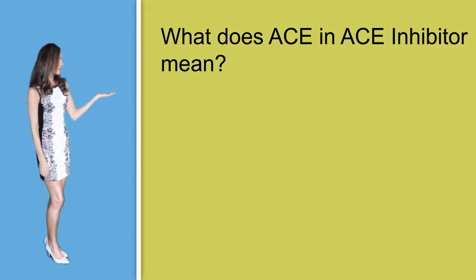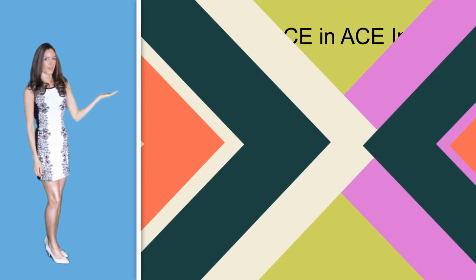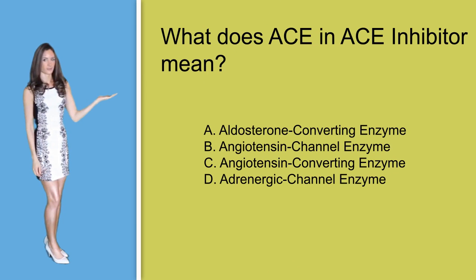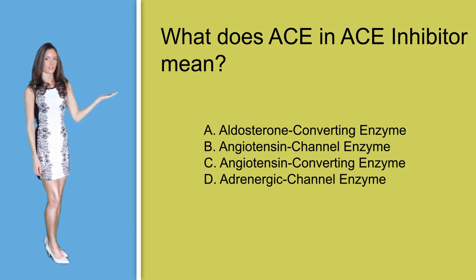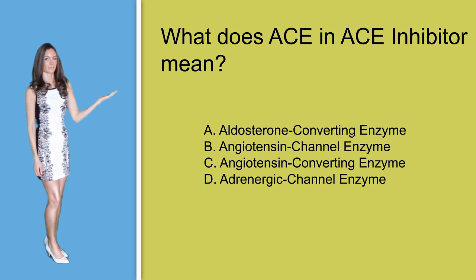Question number two: What does ACE in ACE inhibitor mean? A. Aldosterone converting enzyme. B. Angiotensin channel enzyme. C. Angiotensin converting enzyme. D. Adrenergic channel enzyme.